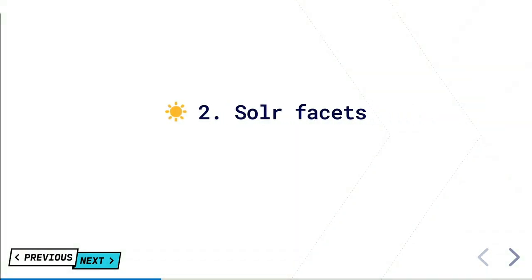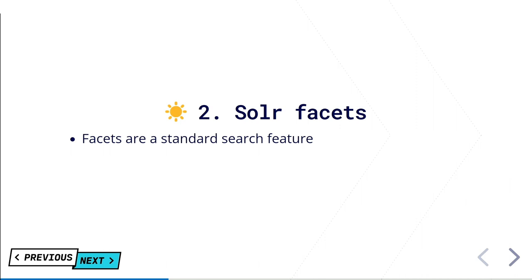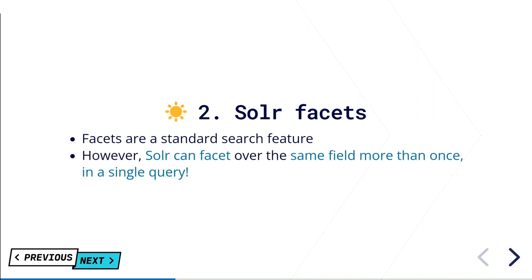Next up, number two: facets. Facets allow users to narrow results by applying filters. You can think of them as checkboxes — a classic example is the Amazon.com left-hand interface where you've got all those filters to drill down into products. These filters often map to taxonomy terms in Drupal. Facets are very well supported in SAPI via the facets module. We had an interesting feature request from a client: when facets were active, they shouldn't limit the list of other facets — all facets should display at all times.